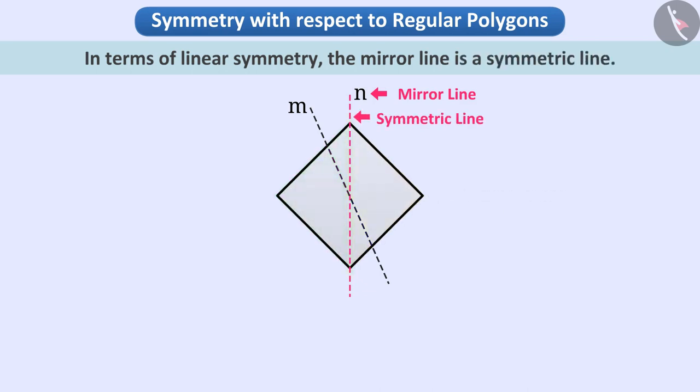But, if we talk about the line M, we do not get two such parts which are mirror reflections of each other by placing mirrors along it. In this way, the line M cannot be a mirror line as well as a symmetric line.